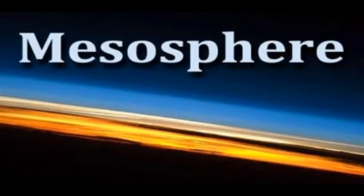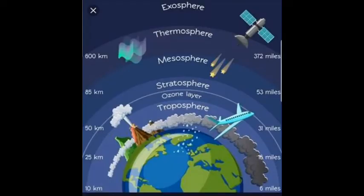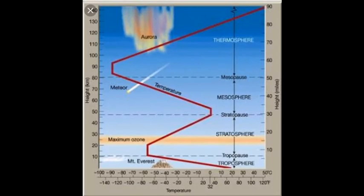The mesosphere lies above the stratosphere. It is the third and coldest layer of the atmosphere. It extends from about 50 kilometers to about 80 kilometers above the mean sea level. The temperature decreases with increase in height, reaching about minus 100 degrees Celsius at about 80 kilometers.